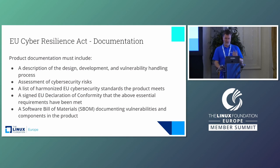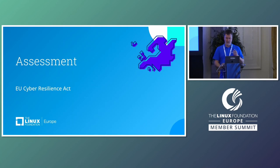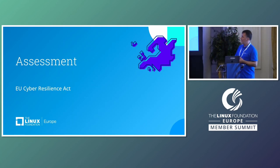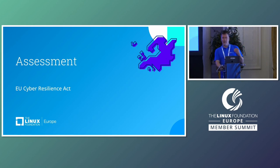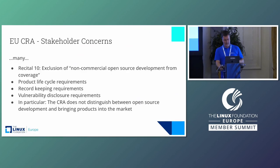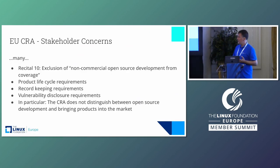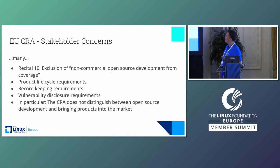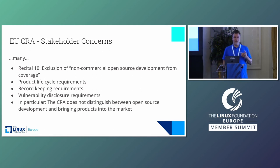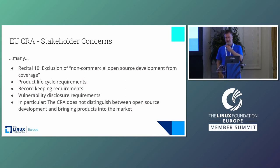Everything I gave you so far, besides my snarky undertone, was just a summary of what is written in the text. I would now like to give a brief assessment to try to explain why we're worried about this, if it's not clear yet. There are many concerns from all sorts of stakeholders. There is this exclusion of non-commercial open source development from coverage in the CRA, and if there's one topic that we've spent hours of group discussions on — how to improve this wording — it's that.